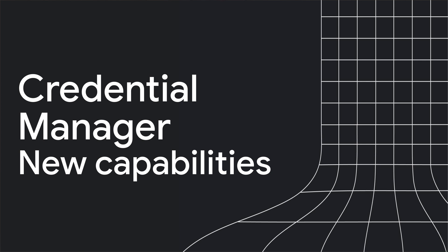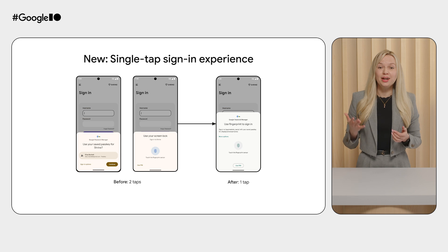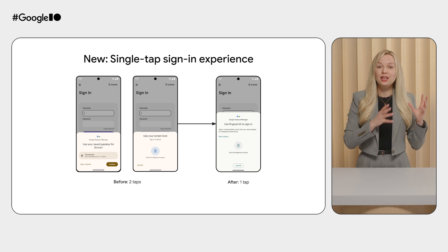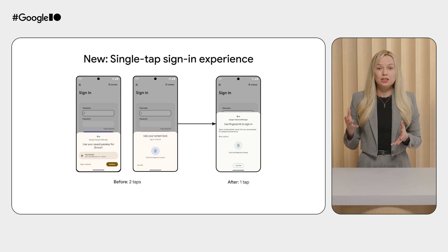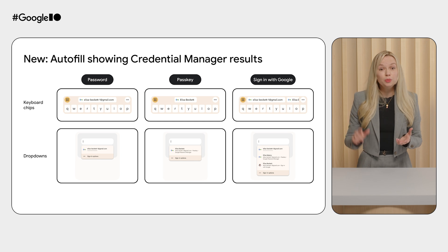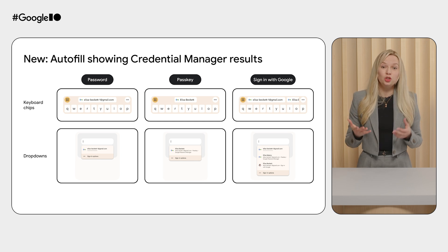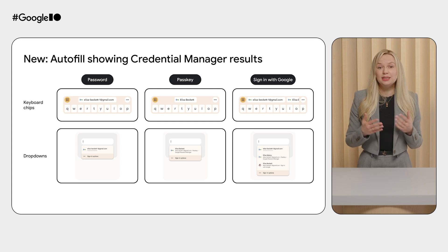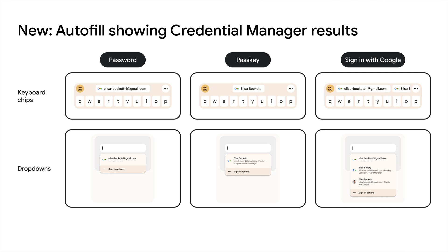We're excited to bring even more capabilities to Credential Manager this year. To simplify the Passkeys user experience even further, we're enabling a single-tap Passkeys sign-in by merging the account selector and the biometric prompt. The user will just need to use their face, finger, or other screen lock and they will be logged in. This improvement will be automatically supported in new versions of Credential Manager on Android 15 and higher, requiring no additional work for developers. Users may accidentally dismiss the Credential Manager account selector, so Credential Manager options will also be shown in autofill surfaces — users will see their saved credentials in keyboard suggestions or when clicking on a relevant input field during sign-in.